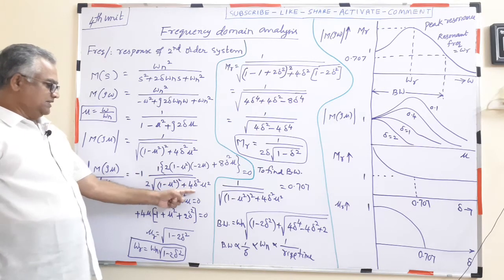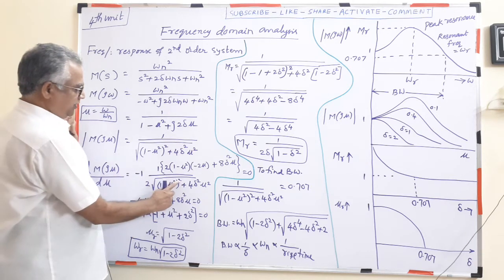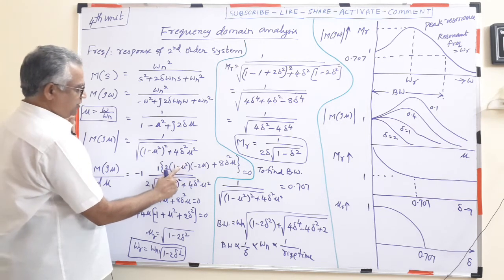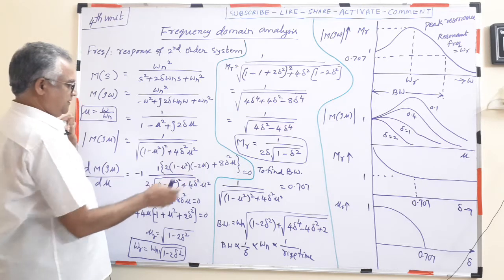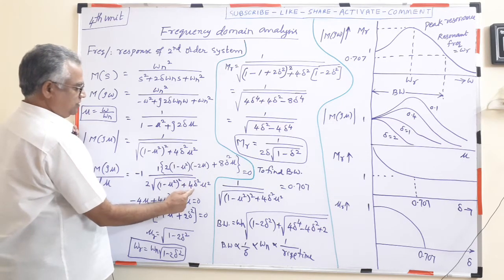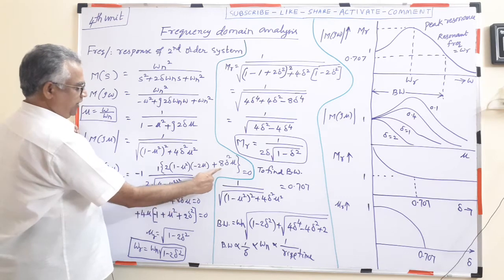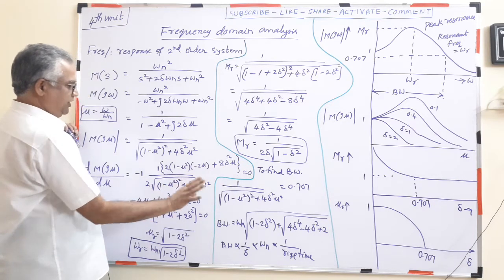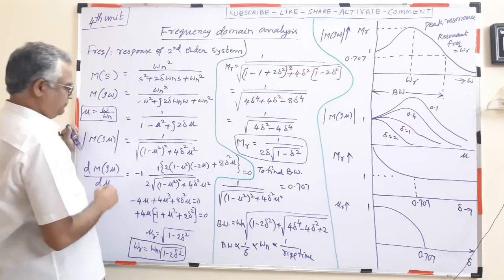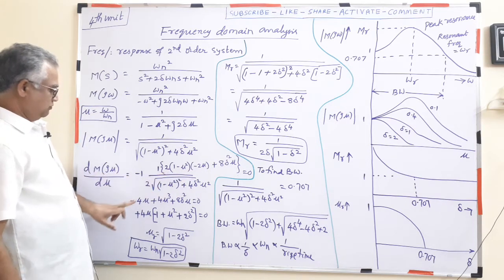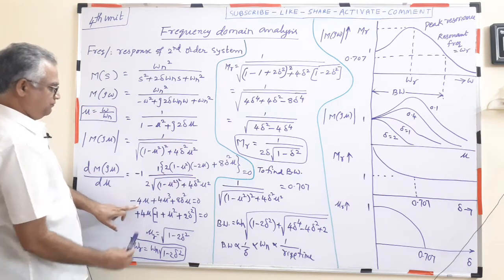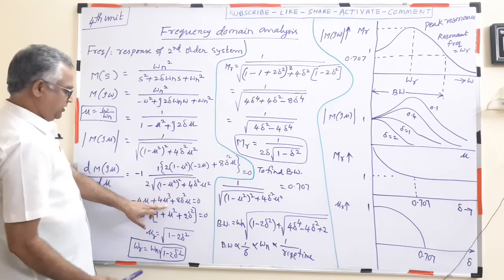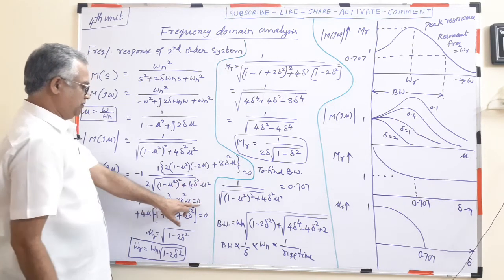Differentiating and simplifying: the differentiation of (1 − μ²)² gives 2(1 − μ²)(−2μ), and the differentiation of 4δ²μ² gives 8δ²μ. Setting the numerator to zero and simplifying, we get: −4μ + 4μ³ + 8δ²μ = 0.